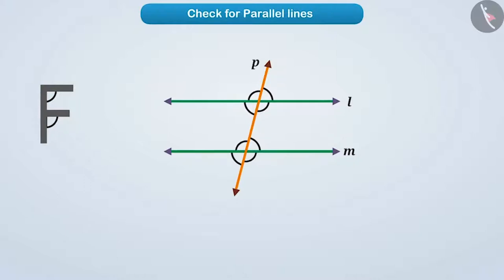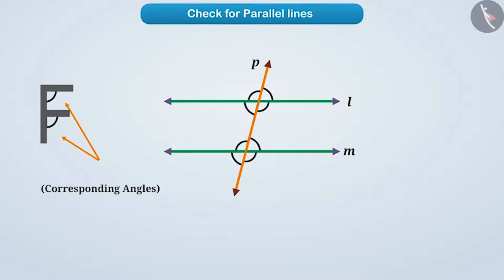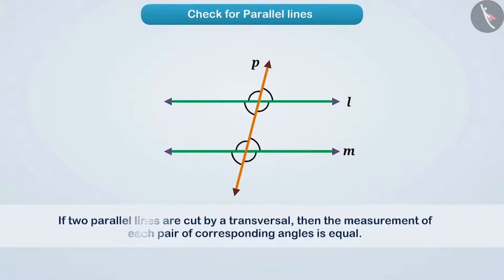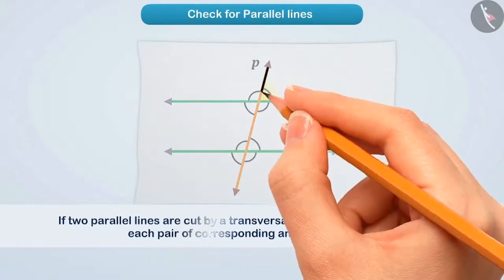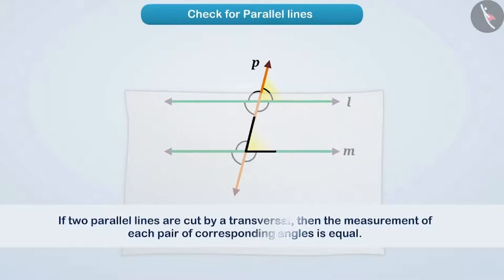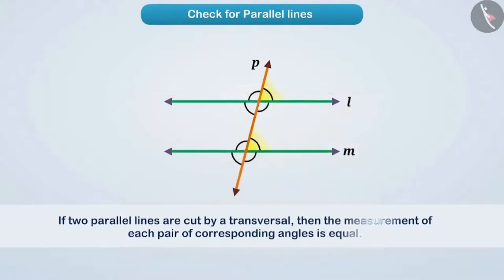Keeping in mind the shape of F, these are the pairs of corresponding angles. You must remember that if two parallel lines are cut by a transversal, then each pair of corresponding angles is equal. If we make this angle on the trace paper and keep it at its corresponding angle, we see that both the angles cover each other perfectly — that is, they are equal.